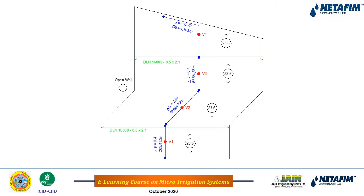The flow rate of each shift is calculated as 23.6 m³/hr, based on 2.5 acres shift area and the application rate. Since the manual valve is placed at the center of the sub-main, flow is split — approximately 12 m³/hr on each side — allowing the sub-main to be designed with a smaller diameter. For this example, the sub-main is designed as 63 mm, with the frictional head losses calculated for that length.